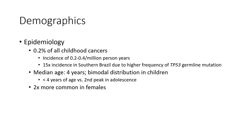Demographic epidemiology: ACC represents 0.2% of all childhood cancer, with an incidence of 0.2 to 0.4 per million person years. There is a 15 times higher incidence in southern Brazil due to a higher frequency of TP53 germline mutation. Median age is 4 years, with a bimodal distribution in children — under 4 years of age with a second peak in adolescence. It is two times more common in females.